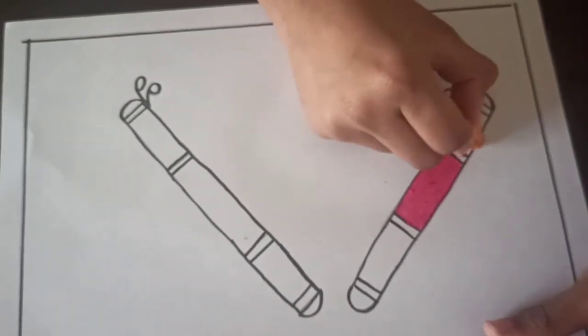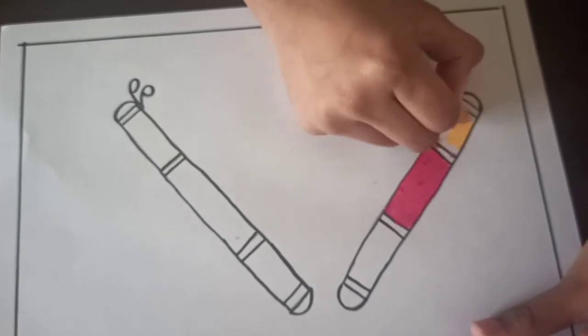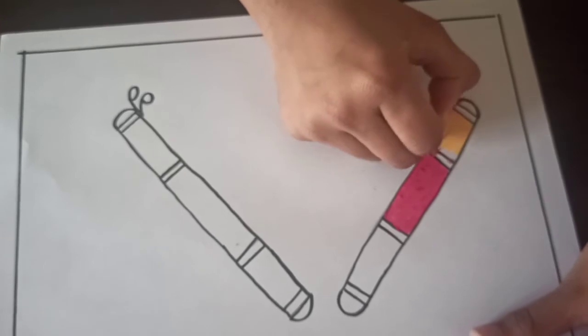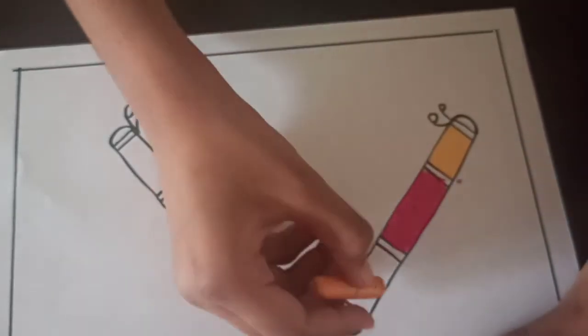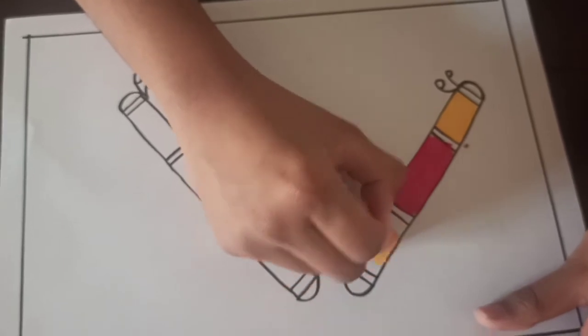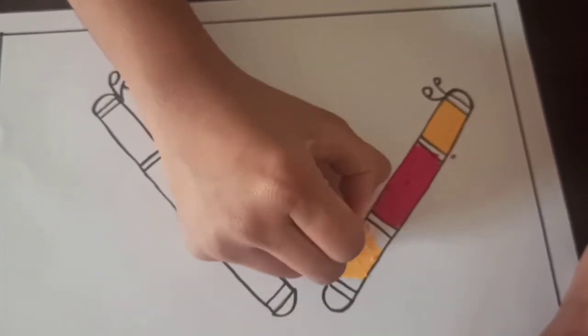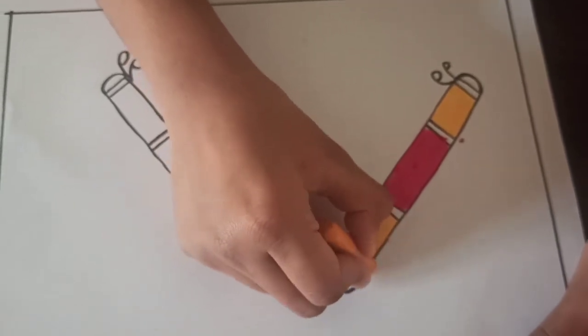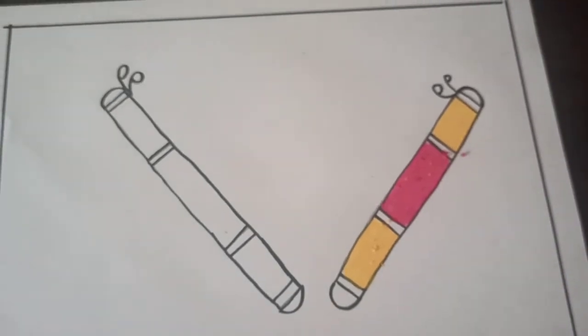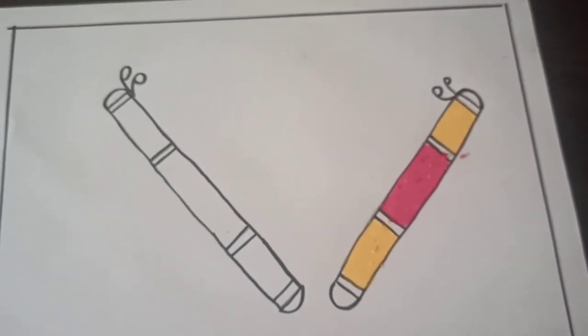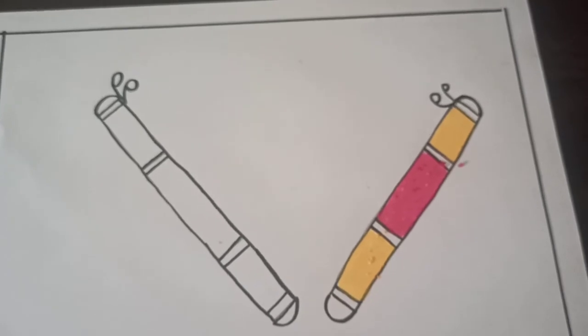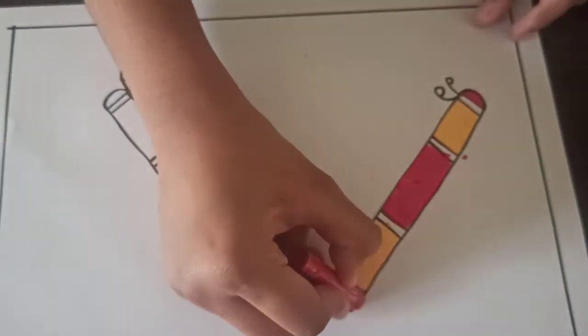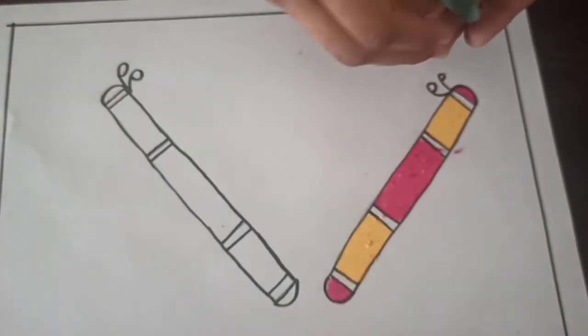Now take another color. And fill the remaining portion. From both the side we will fill the same color. Or you can use multi color also. It doesn't matter. It will also look good. See same two colors I am using here. And from this side also. Now again I am taking one more color. And at the end portion I am filling that color. You can use same color or different color. Doesn't matter.